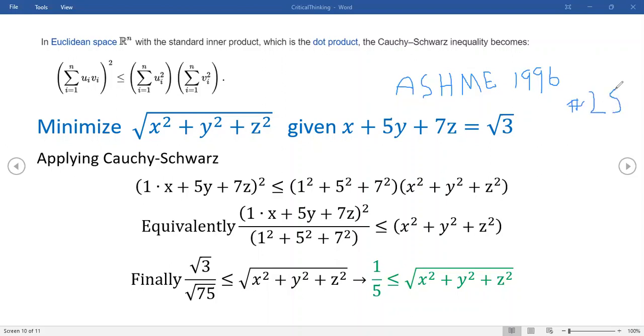Now again, the problem back then dealt with just two variables, X and Y, and the constraint also was a two variable linear constraint. One way to interpret the problem was for the two variable case to think of it as a circle and a line. And then I think where the line was tangent to the circle, that would help you determine when this expression achieved its minimum value.